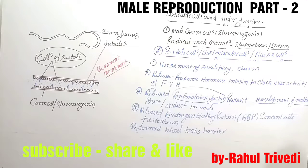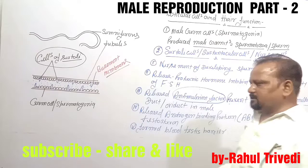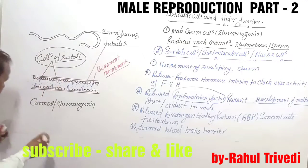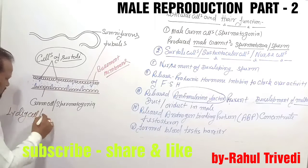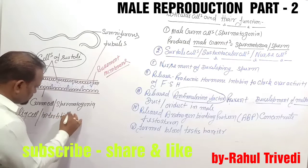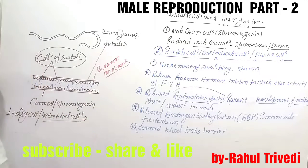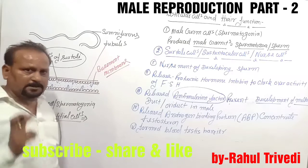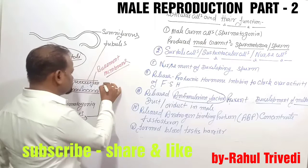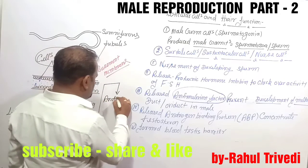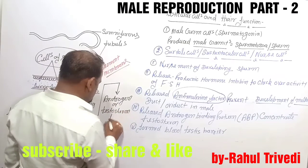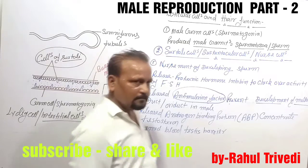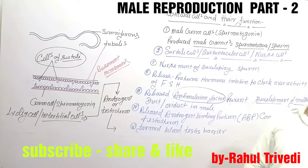The Leydig cells, also called interstitial cells, are present in the connective tissue of the testicular lobules. They secrete male hormones — androgens or testosterone — which provide secondary sexual growth in males. Testosterone matures the male, drives secondary sexual characteristics, and initiates spermatogenesis.